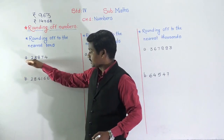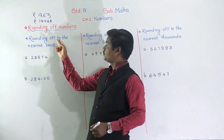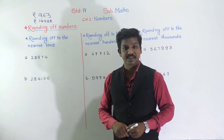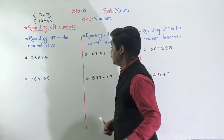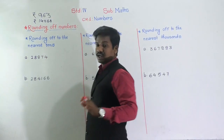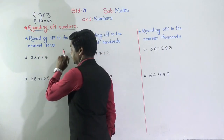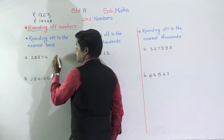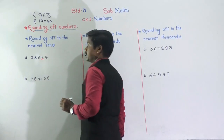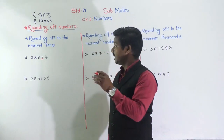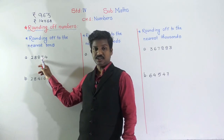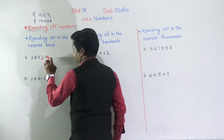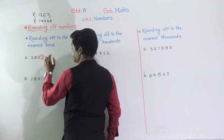The question will be: round off the following numbers to the nearest tens. For the number 28,974, which digit is at the tens place? This is the ones place, this is the tens place — so there is 7 at the tens place. Now, after finding the tens place digit, see the next digit after it. After 7, there is 4.